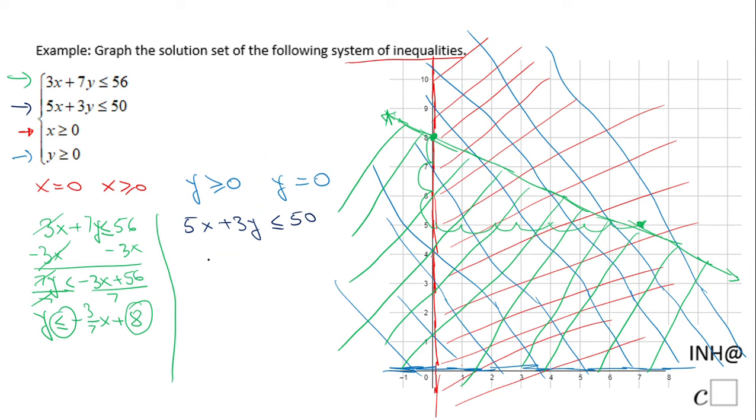Let's solve for y also here. We're gonna subtract 5x on both sides and we have 3y less or equals negative 5x plus 50. And divide by 3. We get y less or equals negative 5 over 3x plus 50 over 3.